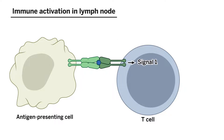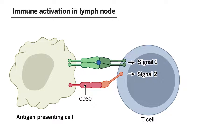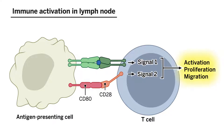But in order to get immune activation, there has to be a co-stimulatory, a second signal. That is shown in the red — CD80 or CD86 binds with CD28. And then the T-cell can be off to the races. It can proliferate, secrete cytokines, and start to migrate to tissue in order to recognize that antigen.